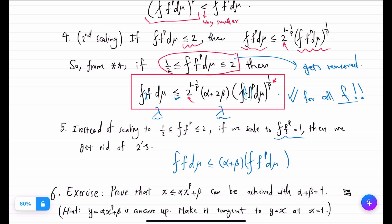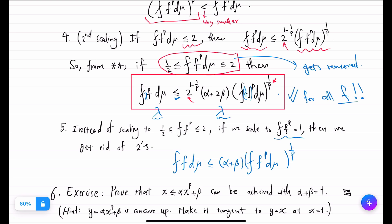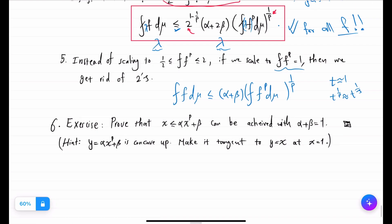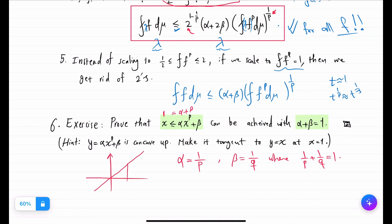The whole thing to the power 1 over p. It's a simple exercise to show that this inequality here can be attained by a choice of α and β that makes it equal to 1.